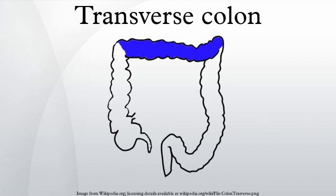It is in relation, by its upper surface, with the liver and gallbladder, the greater curvature of the stomach, and the lower end of the spleen. By its undersurface, with the small intestine.